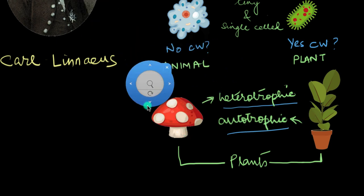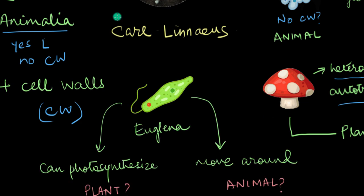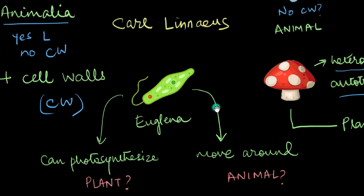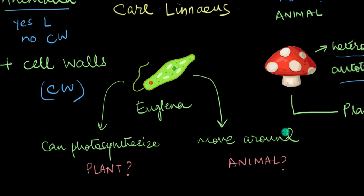And after all of this, there were still some organisms that couldn't be placed in either of these kingdoms. One of these is Euglena, an organism that behaves both like a plant as well as an animal. It can photosynthesize like a plant and it can move around like an animal. Now, where would you place this fellow?